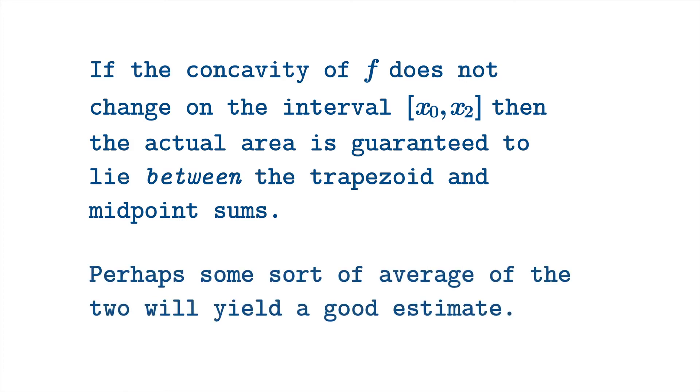Now perhaps because one of these is guaranteed to be too large and one's too small, some sort of average of the two will yield a good estimate of the true area.